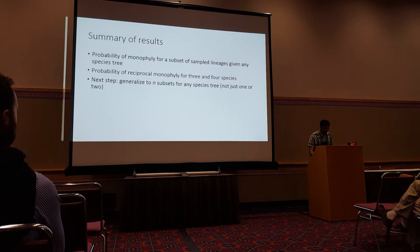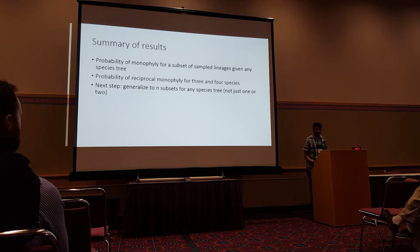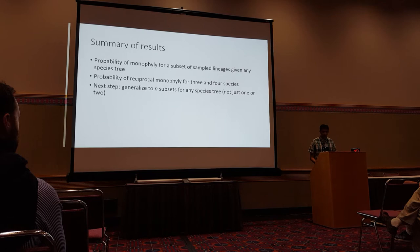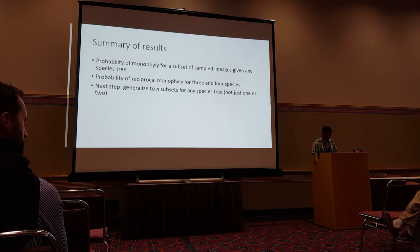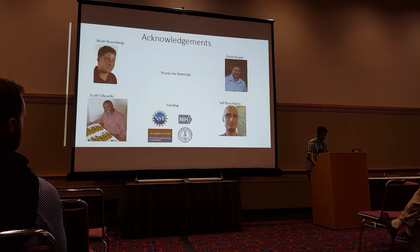In summary, I have derived the probability of monophyly for a subset of sampled lineages given any species tree, and for reciprocal monophyly for three and four species. The next step is to generalize to n subsets for any species tree, which might require incorporating some previous results by Rosenberg and Steel. Thanks for listening, and thanks to my advisor, collaborators, and Jim for helping with the Maize data.